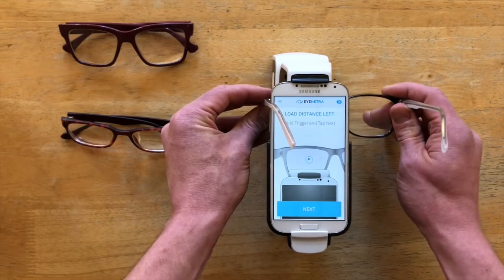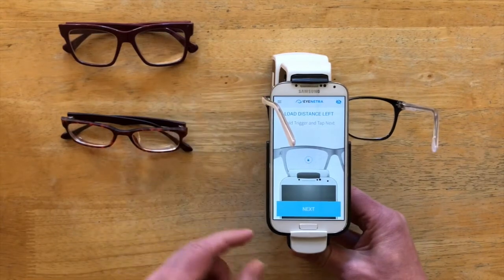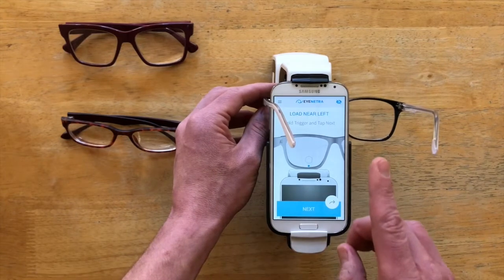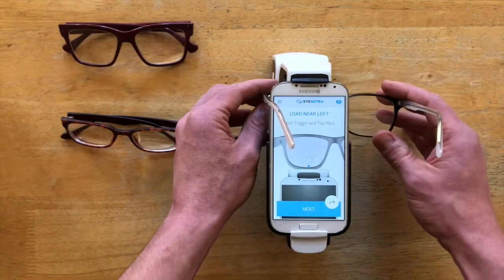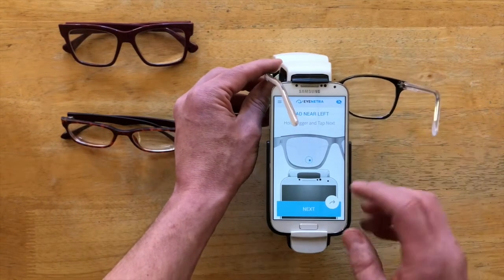I only show you that just so that you make sure you're reading the appropriate region of the lens. So okay align the dot in the circle again, squeeze the trigger, and tap next to take a reading. Now to grab the add value all I have to do is move the glasses slightly forward or away from my body. So I'll slide them up very slowly, align the dot in the circle, and tap next.